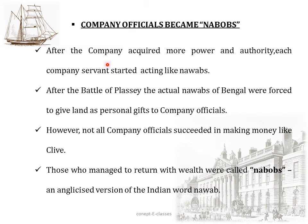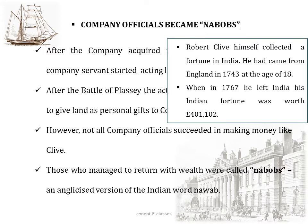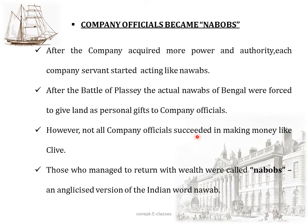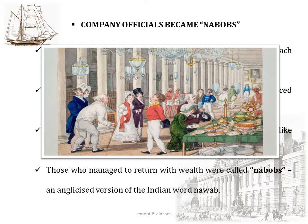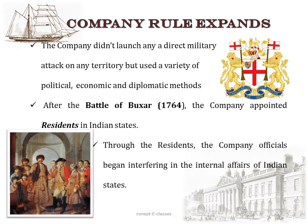After the company acquired powers like the Diwani, each company servant started acting like a Nawab. After the Battle of Plassey, the actual Nawabs of Bengal were forced to give land as personal gifts to company officials. For example, Robert Clive collected a great fortune — he came from England in 1743 at age 18 and when he left India in 1767 had an Indian fortune worth four lakhs. Those who managed to return with wealth led flashy lives and flaunted their riches, and were called Nabobs — an anglicized version of the Indian word Nawab.